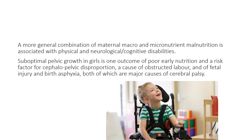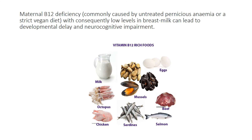A combination of maternal macro and micronutrient malnutrition is associated with physical, neurological, and cognitive disabilities. Suboptimal pelvic growth in girls is one outcome of poor early nutrition — a short mother is more at risk of cephalopelvic disproportion and obstructed labor, leading to fetal injury and birth asphyxia, both major causes of cerebral palsy. Maternal B12 deficiency, commonly caused by untreated pernicious anemia or a strict vegan diet, with consequently low levels in breast milk, can lead to developmental delay and neurocognitive impairment. Vitamin B12 is only present in animal resources like milk, eggs, octopus, chicken, sardines, salmon, and beef.